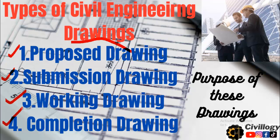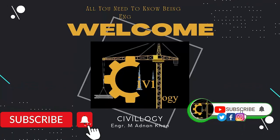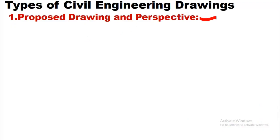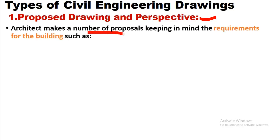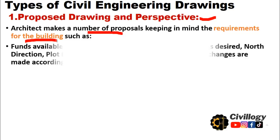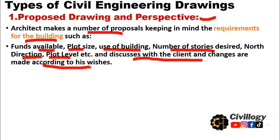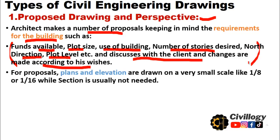The first type is the proposed drawing. The architect makes a number of proposals keeping in mind the requirements of the building — such as funds available, lot size, use of the building, number of stories desired, north direction, and plot level. These proposals are then discussed with the client and changes are made according to the client's wishes.